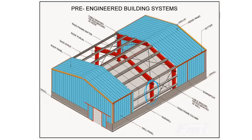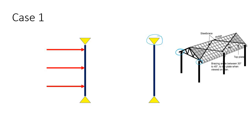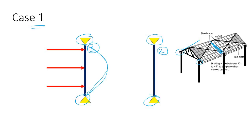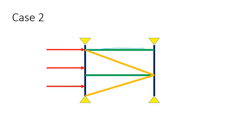You have understood how you can reduce the column size using diaphragm action due to sheeting. Now let's understand how you can use this diaphragm action to design the rafter. Consider the column as a pinned support, and you have two rafters — Rafter 1 and Rafter 2. In Case 1, with some lateral load, this rafter is going to buckle about its minor axis, and you need a huge section size to carry this lateral load.